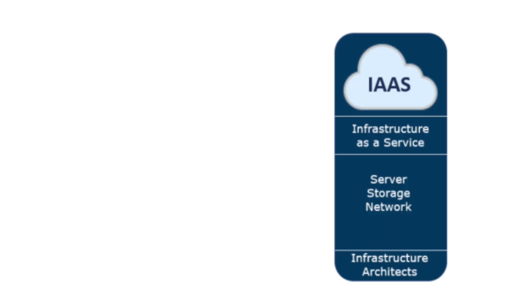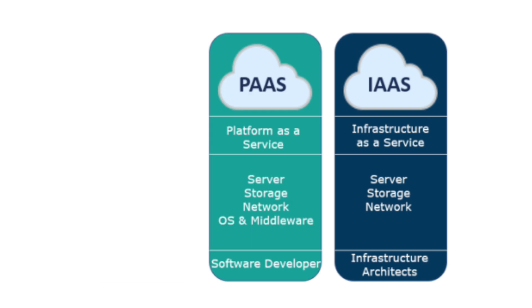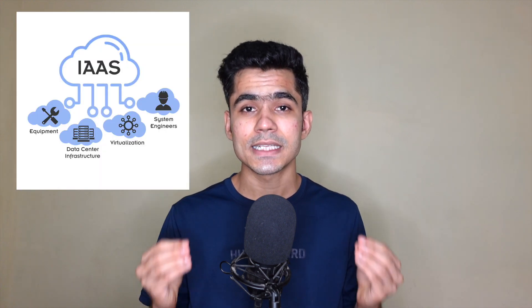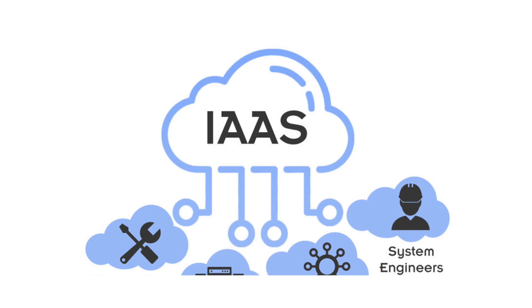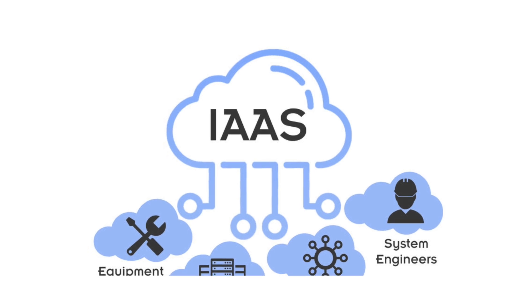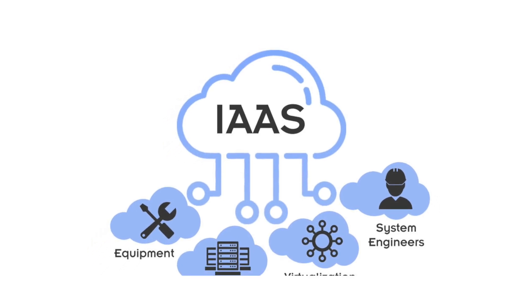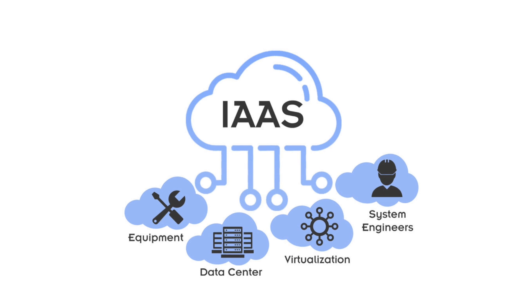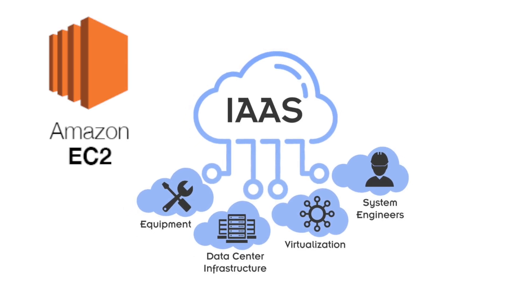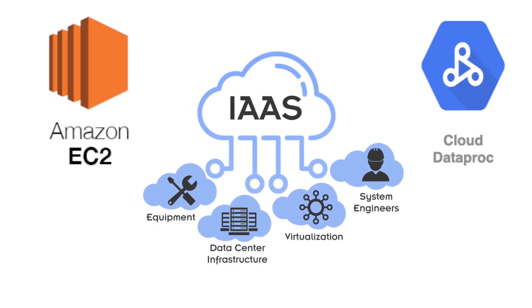The basic building blocks of cloud are the cloud service models: IaaS (Infrastructure as a Service), PaaS (Platform as a Service), and SaaS (Software as a Service). These services are provided by all major cloud platforms. Infrastructure as a Service provides basic infrastructure to the customer, which may include physical machines, virtual machines, networking, storage, and some combination of these. Examples include AWS EC2, Route 53, and GCP Dataproc.